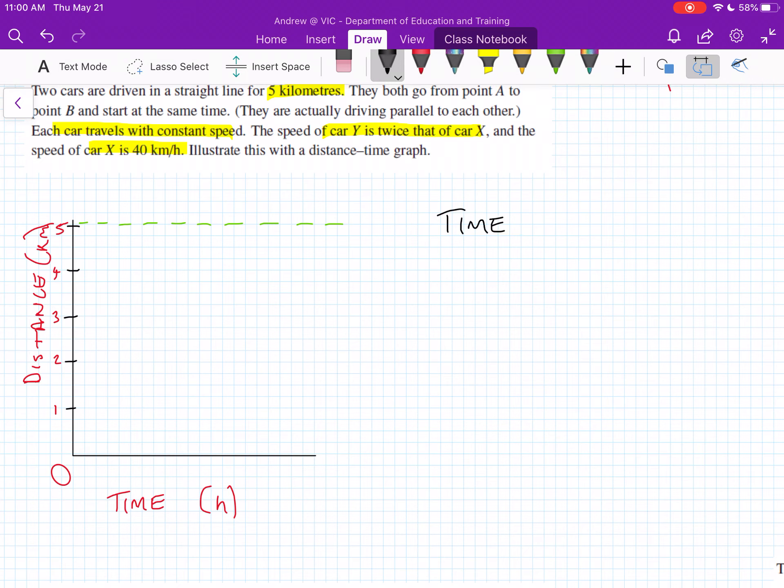We'll start off with X, so X is going 40 km per hour. Y is going twice that, so hopefully we can do some simple math there—that's going to be 80 km per hour.